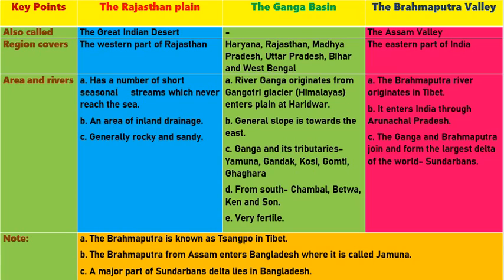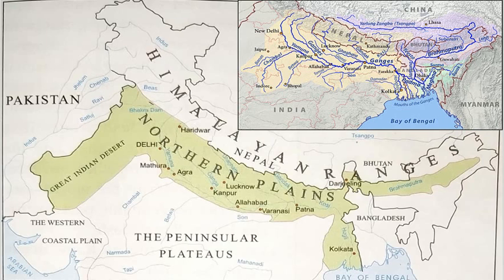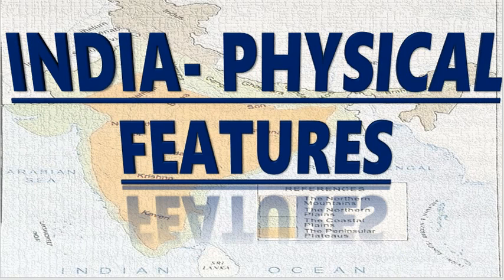The Northern Plains have great importance: they provide a flat surface for building roads, railways, and other infrastructure; rivers deposit fertile alluvium annually making the soil suitable for agriculture; rivers provide water for irrigation; and the favorable climate supports year-round farming. In the next video we will discuss the Peninsular Plateaus. Please read the topic first and then watch the video. Thank you.